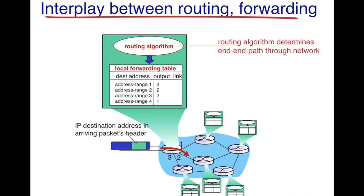Once the routing algorithm runs, it determines the following: for address range 1 — marked in the table — send all packets destined for address range 1 along output link 3. For packets destined for address ranges 2 and 3, send them along link 2. And for all other addresses, send them along link 1. This is how routing and forwarding interact with each other.